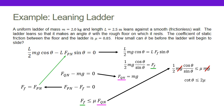I notice that's cosine of theta divided by sine of theta, so I'm going to turn that into a cotangent. I also notice that I've got mg on both sides, so I'll cancel that out. After a little more manipulation, I get a very simple relationship: the cotangent of my angle is less than or equal to two times my coefficient of static friction.